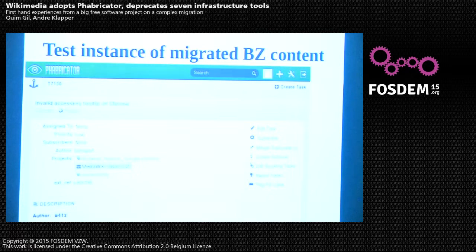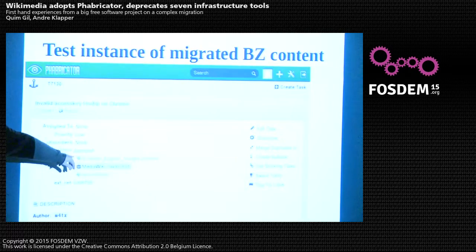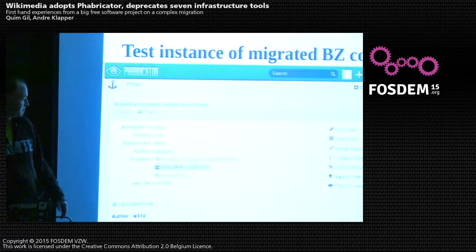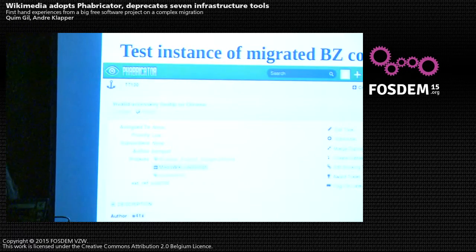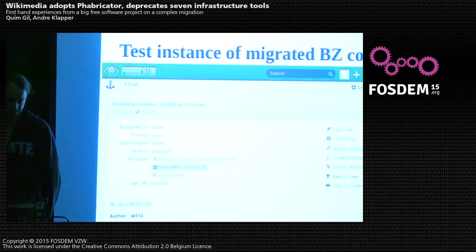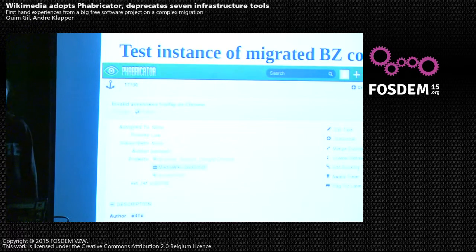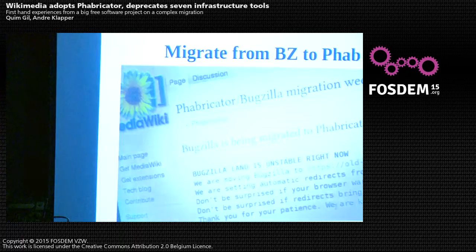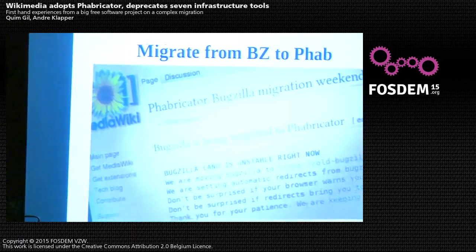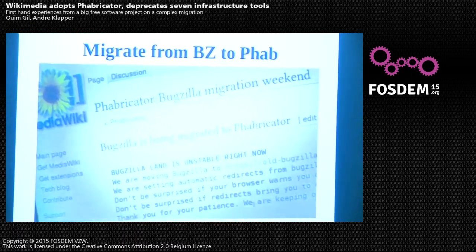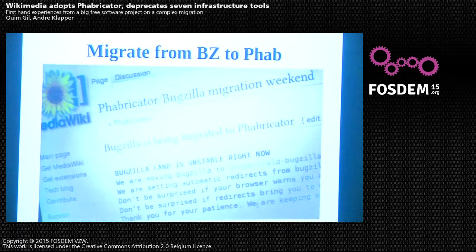This screenshot is close to how Fabricator looks — this was a test instance, so some colors and tagging decisions have changed since. We asked the community to play with it for two or three weeks and received 45 bug reports, 25 of which we fixed. That was really helpful and I'd recommend that approach.